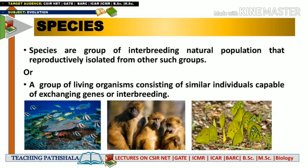In the second definition it has been mentioned that a species is a group of living organisms consisting of similar individuals capable of exchanging genes or interbreeding. Whenever there is interbreeding between two individuals of the same group, there is an exchange of genes, and those genes are seen in their offspring — some genes coming from the mother and some from the father.